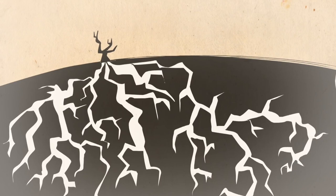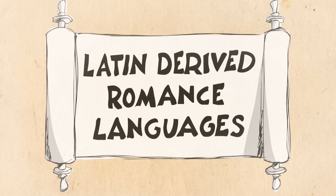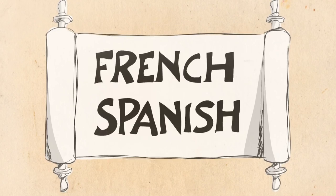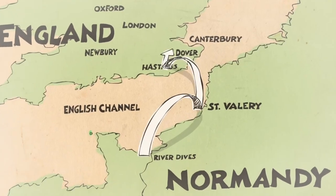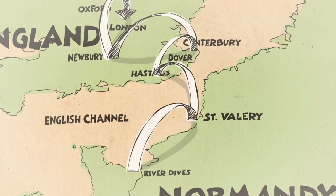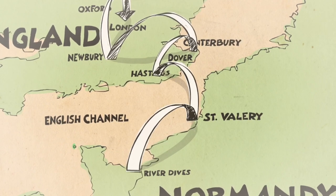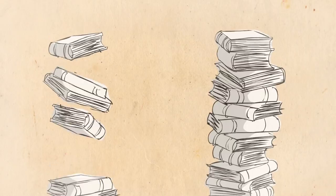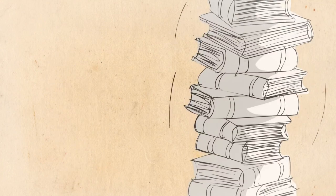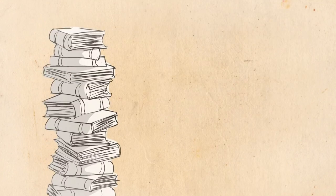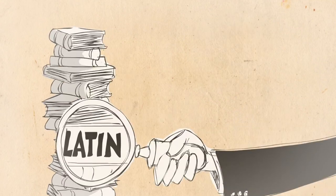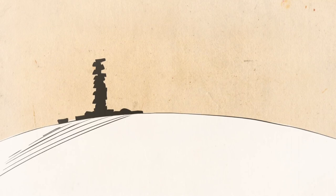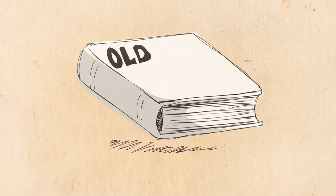While modern English shares many similar words with Latin-derived Romance languages like French and Spanish, most of those words were not originally part of it. Instead, they started coming into the language with the Norman invasion of England in 1066. When the French-speaking Normans conquered England and became its ruling class, they brought their speech with them, adding a massive amount of French and Latin vocabulary to the English language previously spoken there. Today, we call that earlier language Old English.